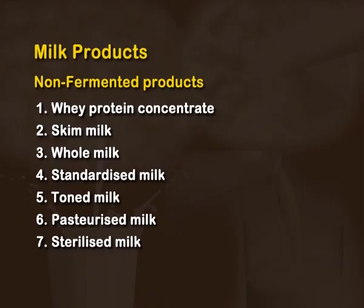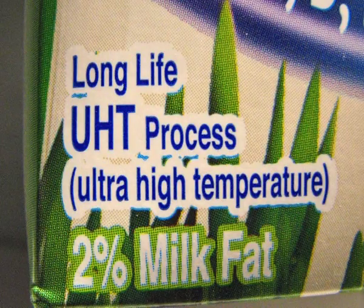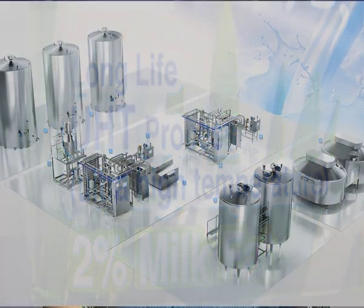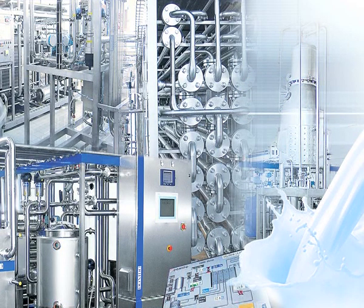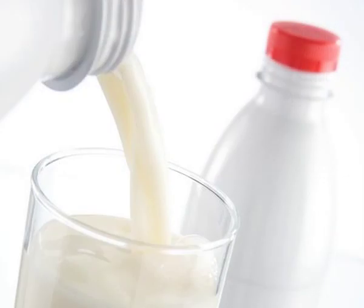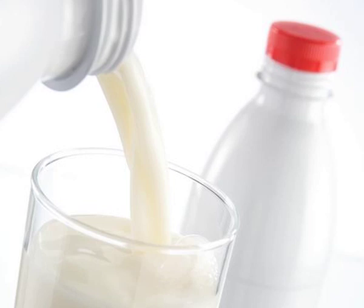The milk found in tetra packs is called ultra high temperature processed milk. In this process, milk is subjected to a temperature of 135 degrees and above for a very brief period of time, ensuring that all bacteria and spores are destroyed. This milk can be safely stored unrefrigerated for up to 120 days or 3 months from the date of manufacture. Once opened, it needs to be refrigerated and utilized within 5 days.